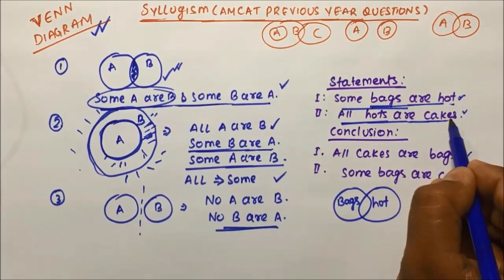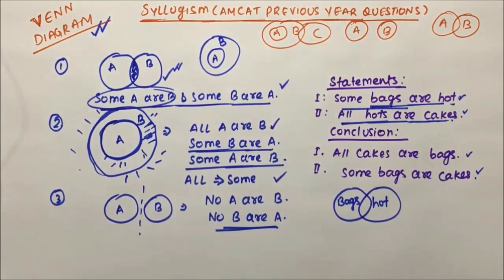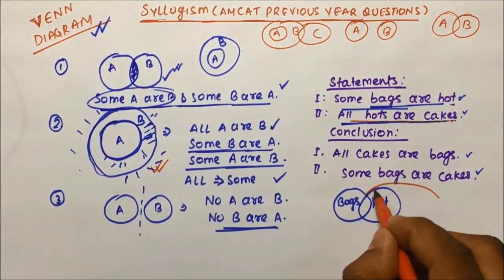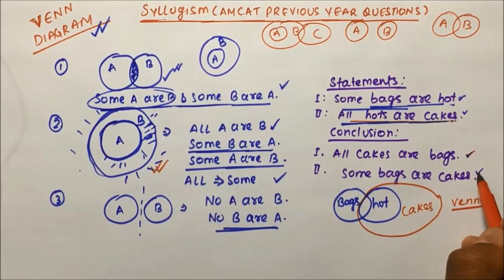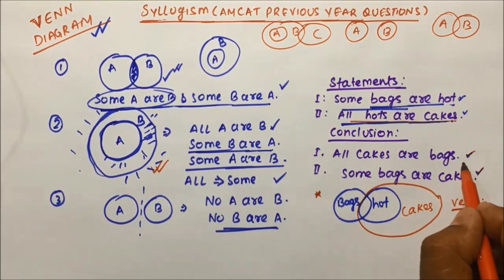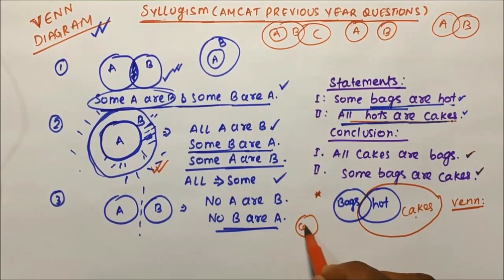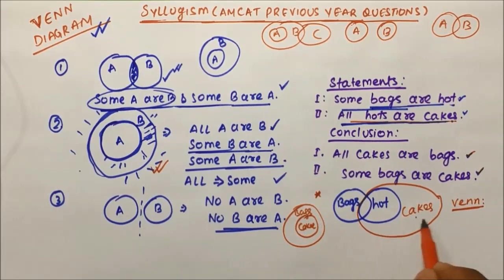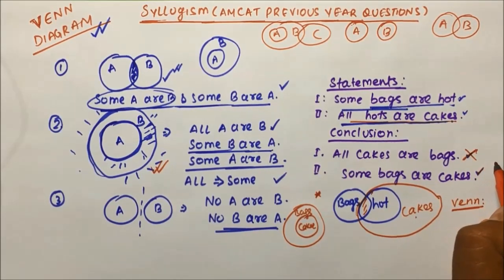The second statement is 'all hearts are cake.' If all A are B, we place all A inside B, so all hearts are placed inside cakes. We draw the Venn diagram accordingly. Now let's check the conclusions. Conclusion one: 'all cakes are bags' — all cakes inside the bags? No, only some part of cake is inside the bag, so conclusion one is false.